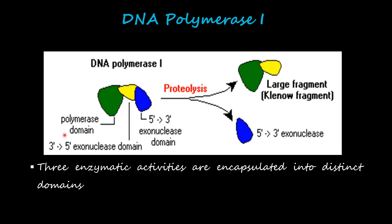The first domain is the polymerase domain, which shows 5' to 3' polymerase activity and is required for replication — specifically to add nucleotides at the 3' OH group. The second domain is the 3' to 5' exonuclease domain, which is required for proofreading and removes any incorrectly added nucleotides during replication. The third domain is the 5' to 3' exonuclease domain, which is responsible for removing RNA primers and repair. Proteolysis — the breakdown of protein into smaller peptides — can be used to generate fragments that lack one or more of these activities.